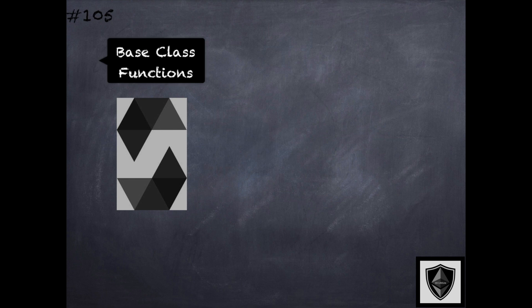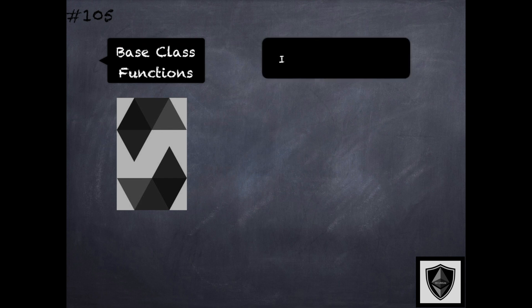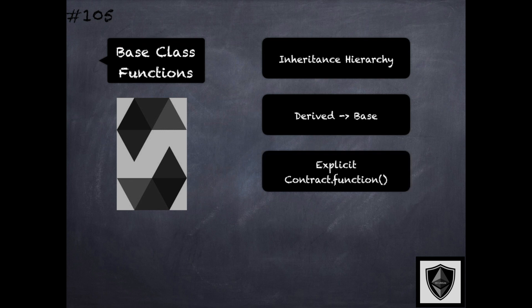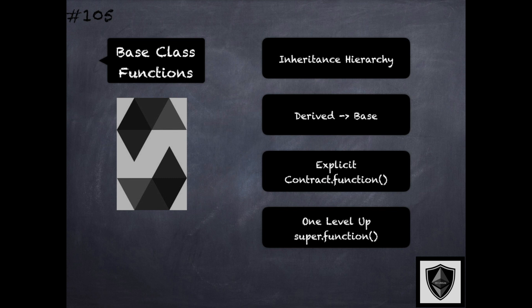Now if we consider the inheritance hierarchy, we have base classes and then we have the derived classes. If in the derived classes one would like to call functions further up in the inheritance hierarchy, this is possible. If we specifically know the contract that has the function we would like to call, then we could specify that as shown here by calling that function as contract.function. And if we want to call the function exactly one level higher up in the flattened inheritance hierarchy, this can be done using the super keyword.